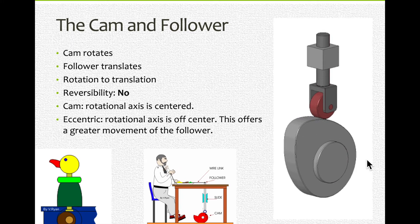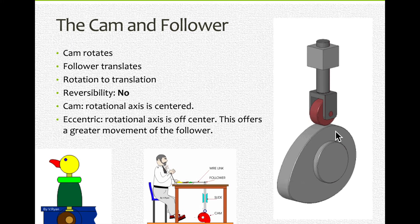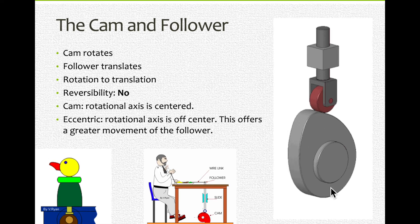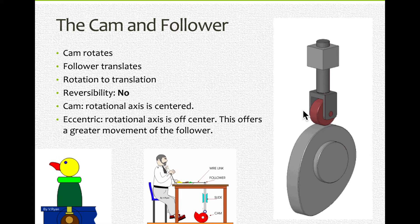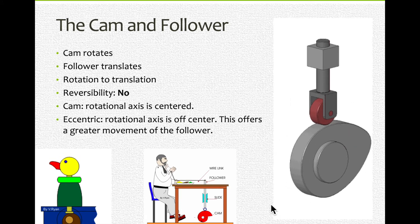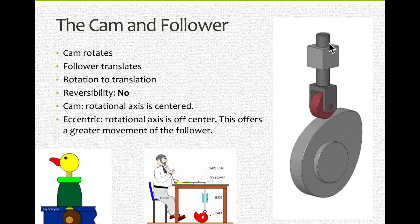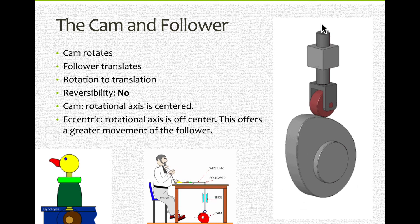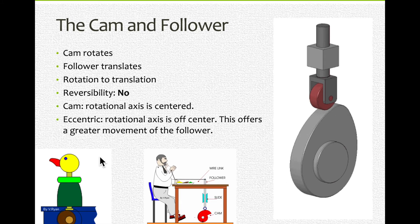So the rotational axis is off center. If it is the case, we call it an eccentric rather than a cam. And by doing that, if I was to move this a little closer to the bottom edge, actually the top part here would go even higher. So it gives greater movement to the actual eccentric and also to the follower to push it higher. So that's not reversible.